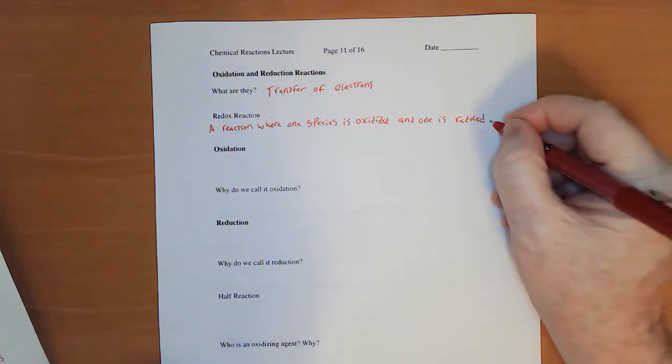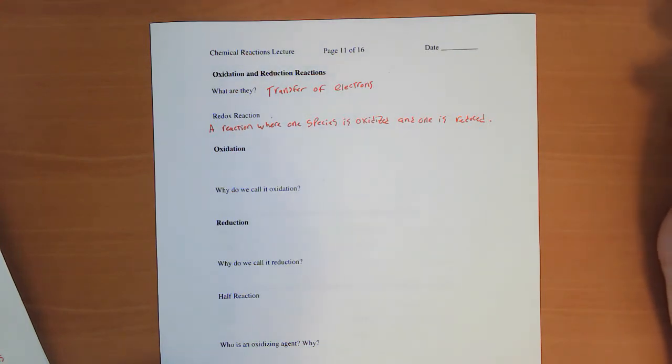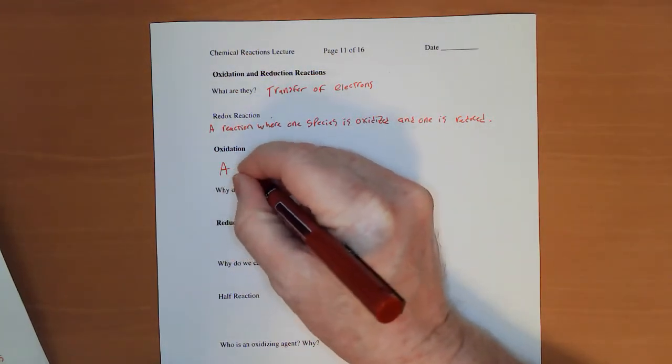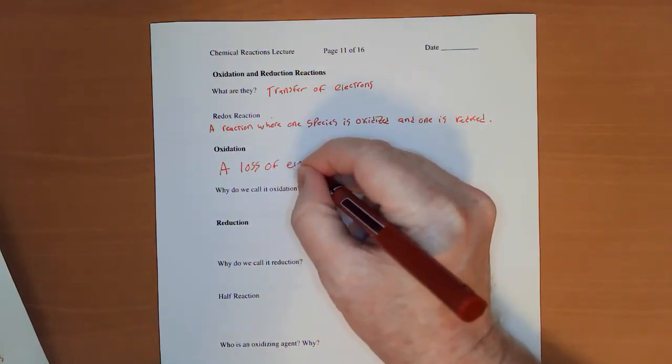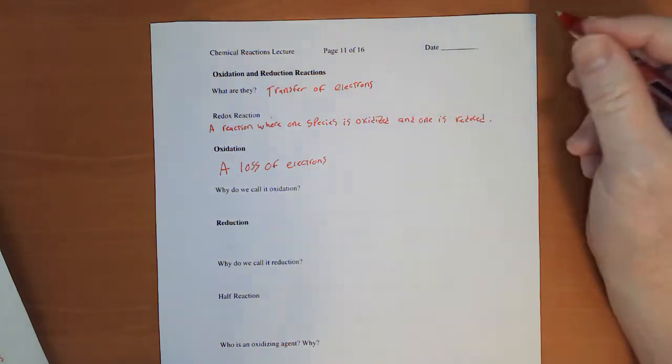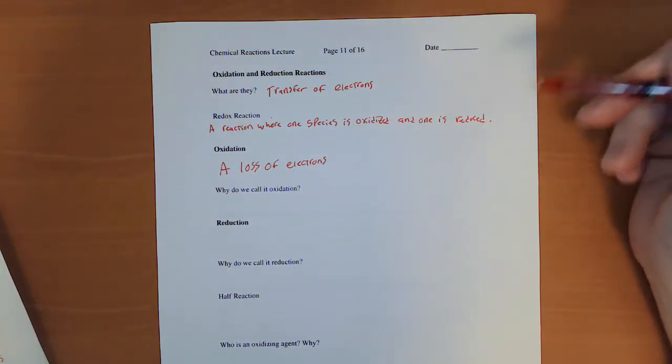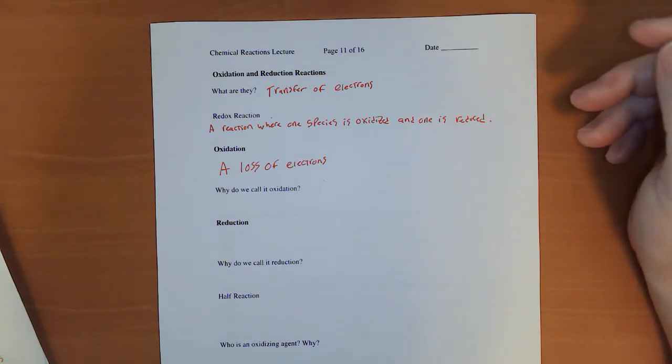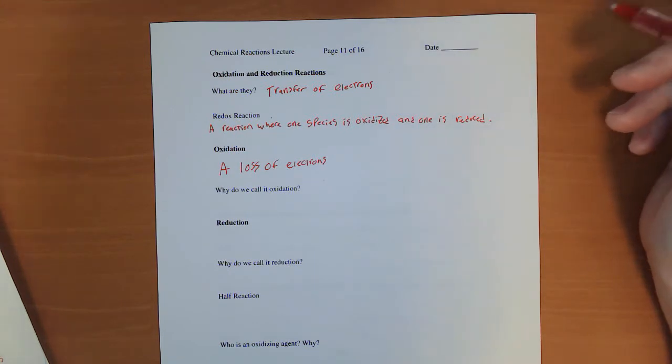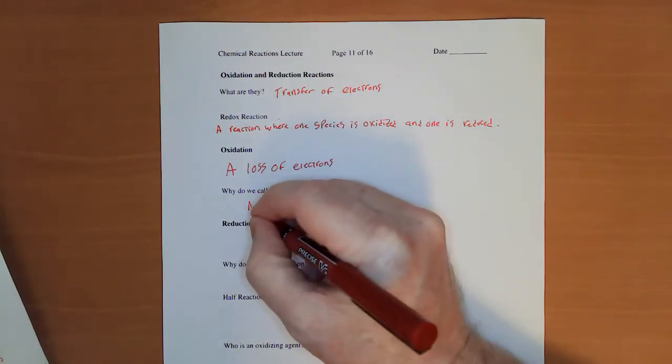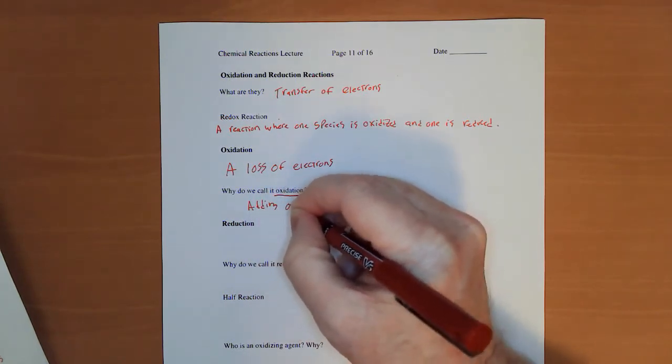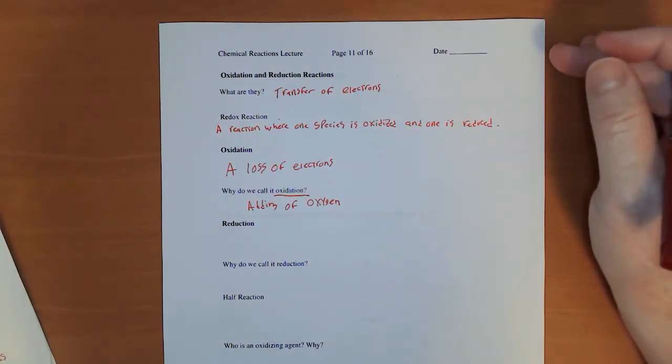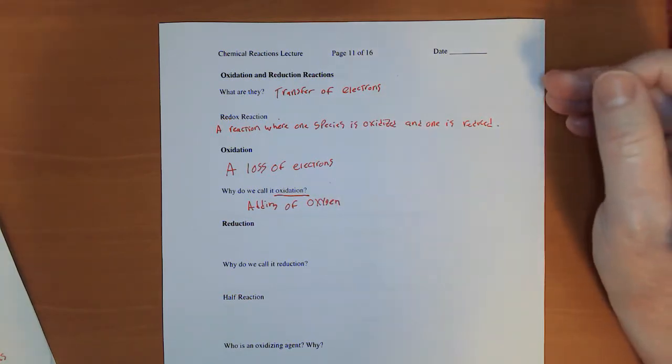You can't have an oxidation without a reduction. They go hand in hand. So specifically, oxidation is a loss of electrons. Now we started talking about oxidation before we actually knew what electrons were based on like the rusting of metal, and we kind of realized that it was the adding of oxygen to metals, and hence we called it oxidation for adding of oxygen. But that's not the only type of oxidation. It's just the first one that we were aware of. So that's kind of the origin of the name for it.